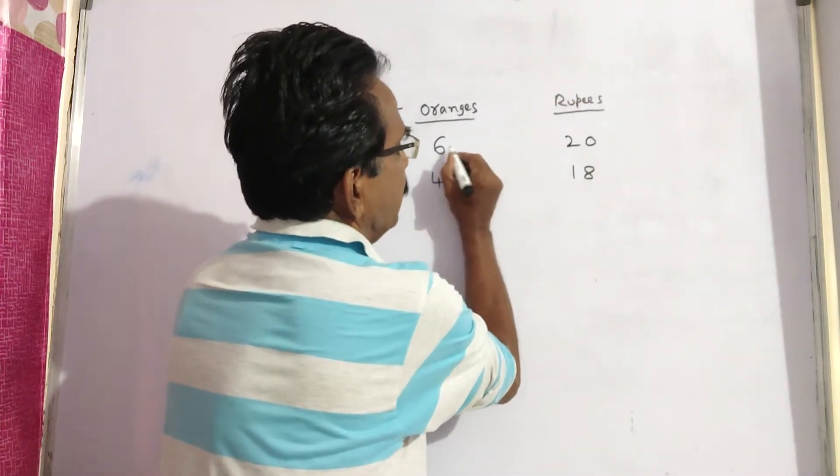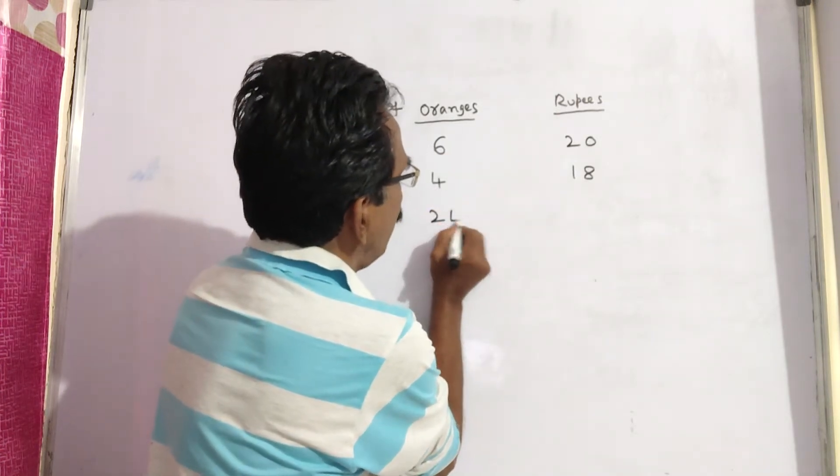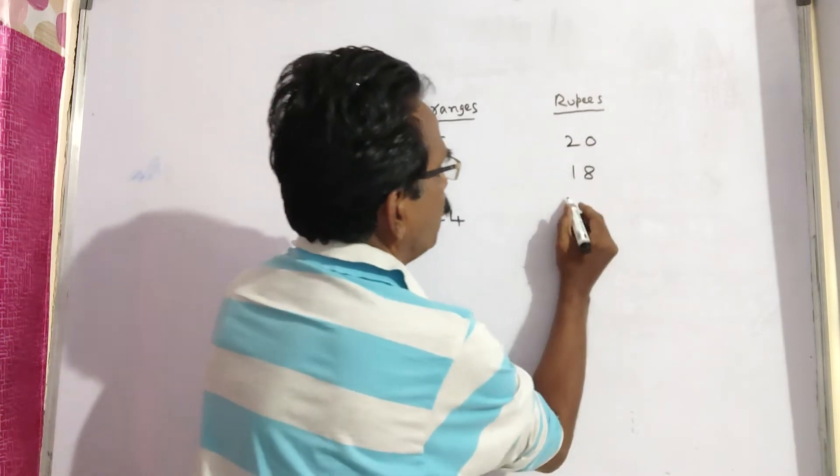I am multiplying the first statement with 4. Four 6s, 24 oranges are bought at Rs 4 times 20, 80 rupees.